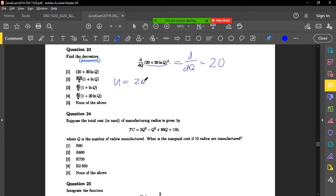So you could say u equals 20 plus 20 ln q. Okay, then you'll have dq over d, d over dq equals u squared. Okay, then obviously that'll be 2u.